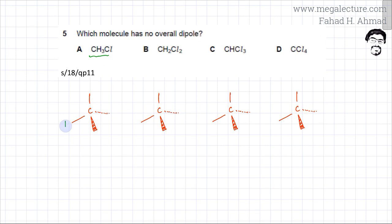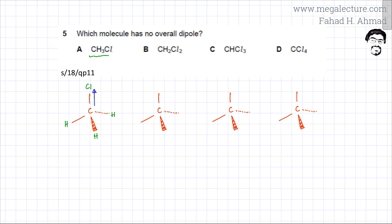For the first molecule, in the tetrahedral arrangement carbon is in the middle with three hydrogen atoms bonded to it and one Cl atom on one side. The most electronegative element in this molecule is chlorine. Chlorine is very electronegative, so all the electrons are going to be attracted closer to chlorine, giving chlorine a partial negative charge, while the rest of the molecule gets partial positive charges. So this first molecule is going to have a permanent dipole.